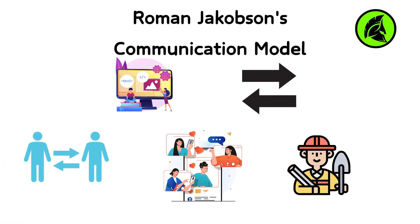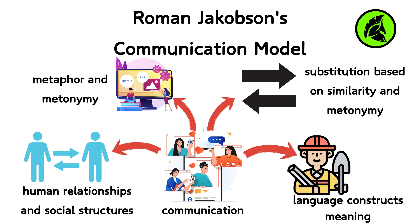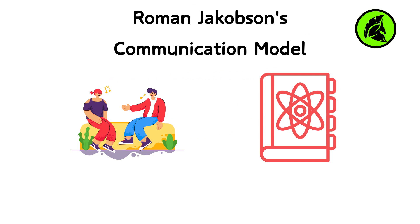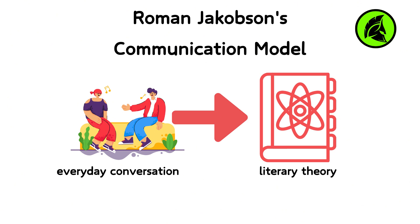Jakobson's model is profound because it demonstrates that communication is not merely about transferring information but involves a complex interplay of multiple functions that reflect and shape human relationships and social structures. His distinction between metaphor and metonymy — where metaphor involves substitution based on similarity and metonymy based on contiguity — further enriches our understanding of how language constructs meaning. This theory helps explain how different aspects of language contribute to the varied and rich ways in which we communicate, offering insights into everything from everyday conversation to literary theory and beyond.